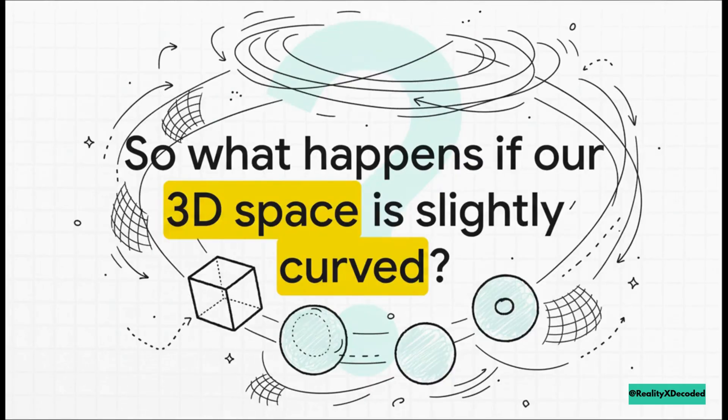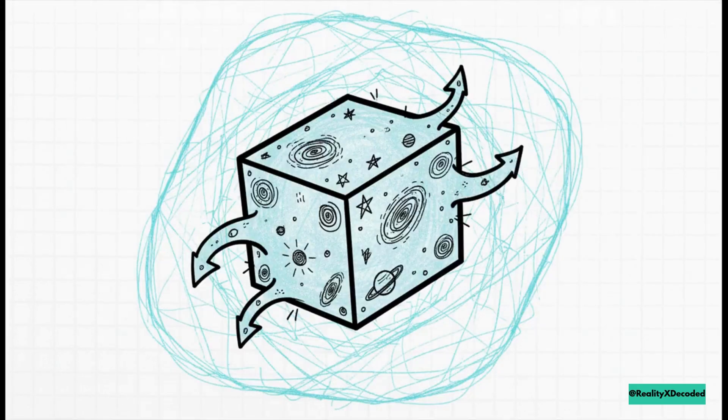So, I think you can see where this is going, can't you? What if our entire three-dimensional universe has a very slight, imperceptible curve to it? Following the pattern, what would that mean? You guessed it. It would mean our 3D universe is curving through the fourth dimension.